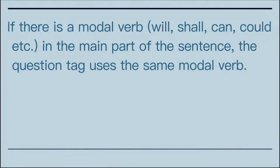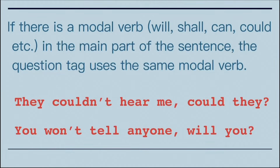If there is a modal verb — will, shall, can, could, etc. — in the main part of the sentence, the question tag uses the same modal verb. For example, 'They couldn't hear me, could they?' Also, 'You won't tell anyone' is a negative sentence, so the tag is 'will you' — the positive form of 'won't' — since 'will' is the modal verb used.